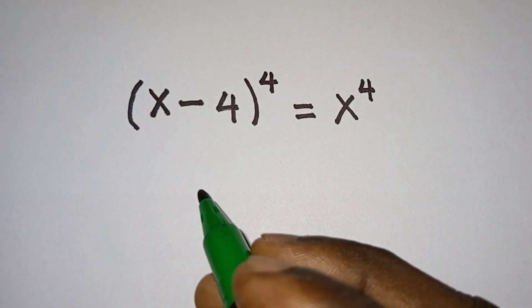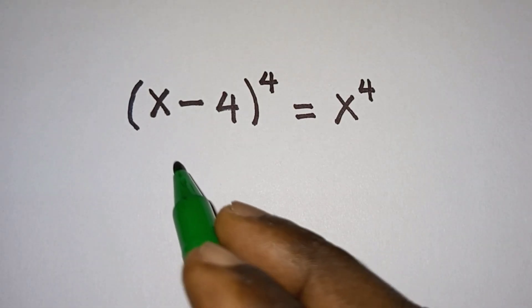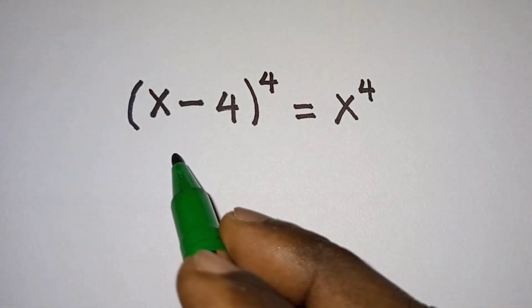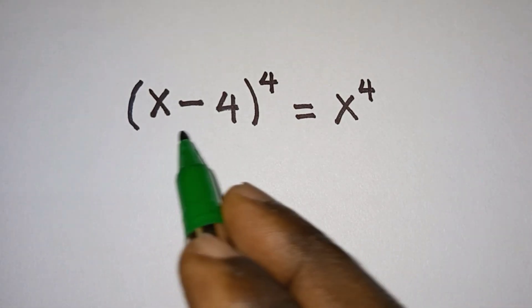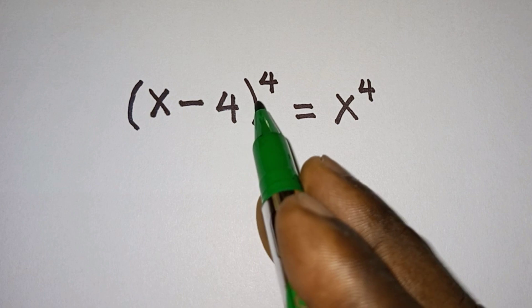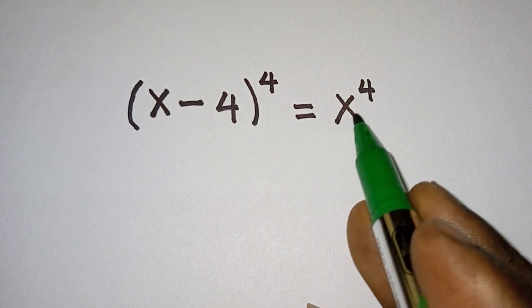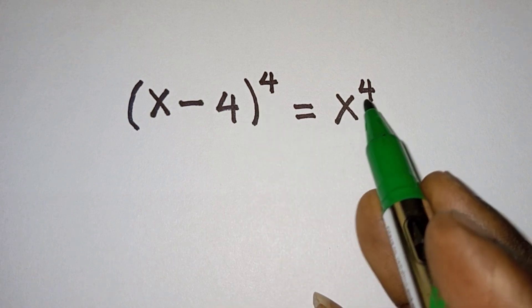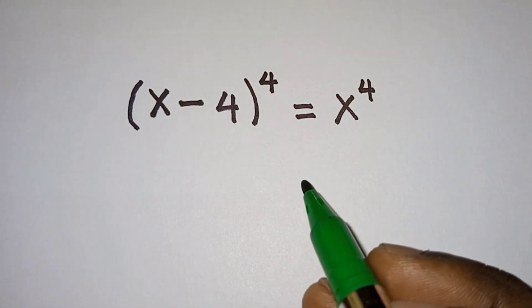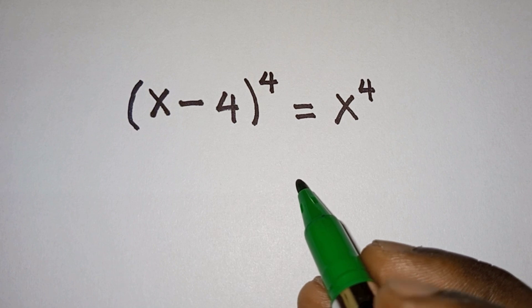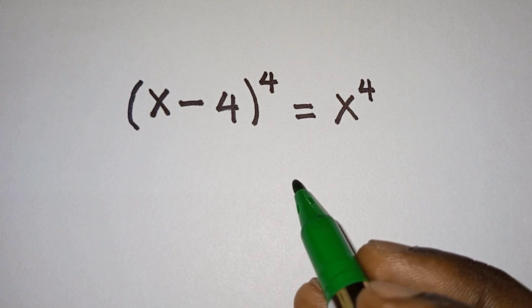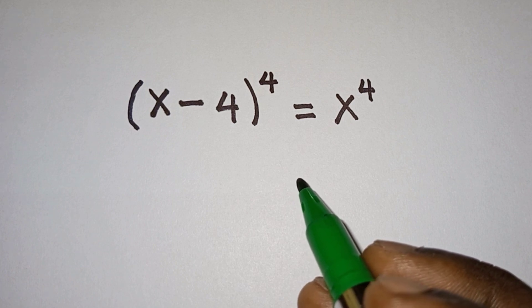Hello everyone. In this video we have this interesting equation: (x minus 4) to the power 4 is equal to x to the power 4, and we are to find the value of x. Before we begin, if you are new here, please subscribe to my channel.